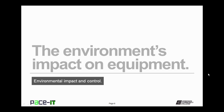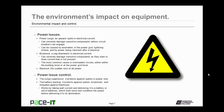Now, let's move on to the environment's impact on equipment. First up are power issues, and when we're talking about power issues, the first thing that we need to talk about are power surges. These are an upward spike in electrical current. They can severely damage sensitive components before circuit breakers can engage. Surges can be caused by anomalies in the power grid. They can be caused by lightning strikes, and surprisingly enough, they can be caused by power being returned after a blackout.